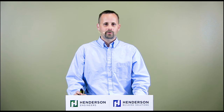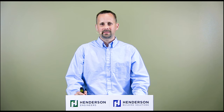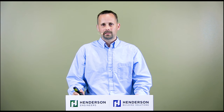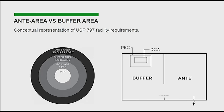The buffer room, ante-room, PEC, and DCA are all acronyms thrown throughout the standard, and it can get really confusing which one you're talking about. Sometimes people end up trying to implement design requirements for one room when it's really supposed to be used for another space. The ante-room is where people come in, put on their clean room garb, and prepare items needed for compounding. The buffer room is where the PEC — the primary engineering controls, meaning the hood or laminar airflow workstation — is located, and that's where they actually compound the drugs. The DCA is the area on that tabletop where compounding is actually performed, and that is the cleanest ISO-5 area.